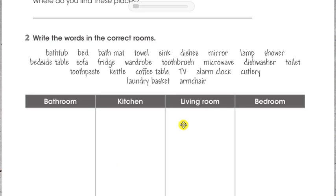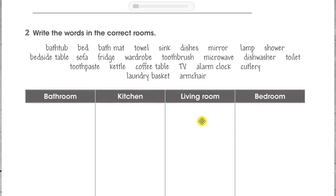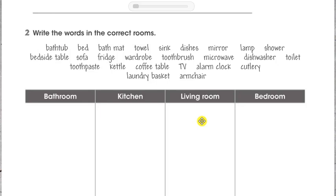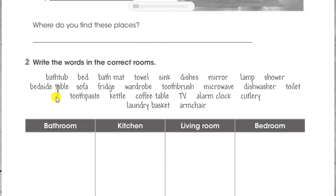That's activity number one. In activity number two, we have to place the words in the correct rooms. Pay attention — we have different words that you can find around the house in different places. We have: bathtub, bed, bath mat, towel, sink, dishes, mirror, lamp, shower, bedside table, sofa, fridge, wardrobe. The categories we have are: bathroom, kitchen, living room, and bedroom. First, check each word.